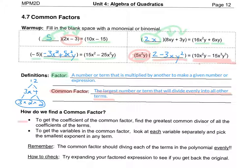To get the coefficient part — the number part — of our common factor, you find the biggest common divisor of all the coefficients of the terms. Looking back at my last example, the coefficients were 10 and 15. I want the biggest number that can divide evenly into both 10 and 15 with a remainder of 0, and that is 5. You look at every single term and find the biggest number that divides them all.